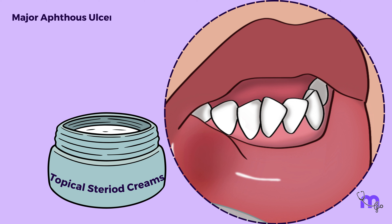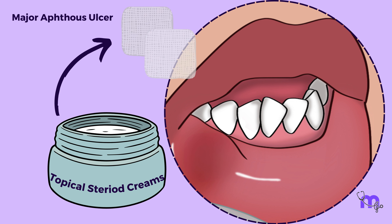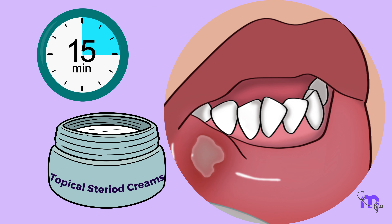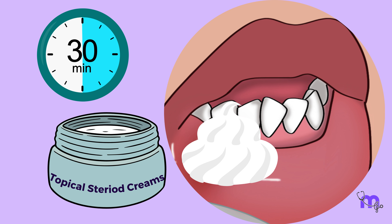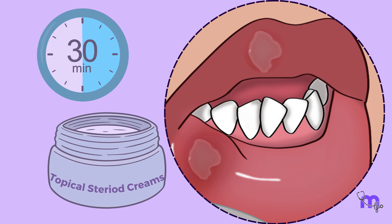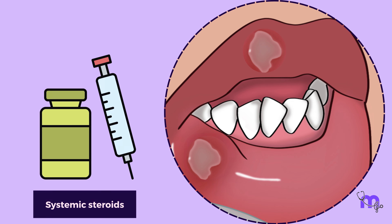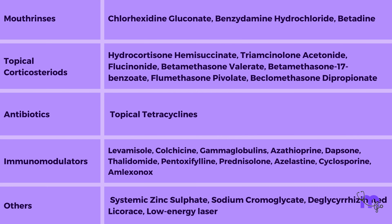Major aphthous ulcers require a more targeted approach. In these cases, a gauze sponge containing the topical steroid is placed directly on the ulcer and left in place for 15 to 30 minutes. This extended contact time allows the medication to work more effectively. In severe cases of major aphthous ulcers, systemic steroids are considered. Here is a table summarizing medications commonly used to treat RAS — feel free to take a screenshot.